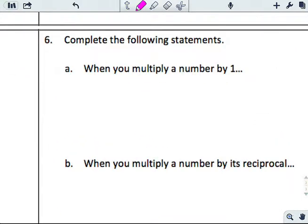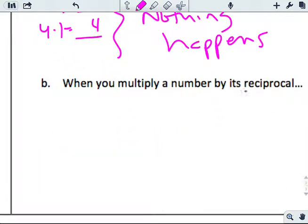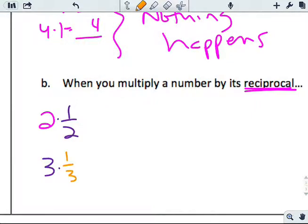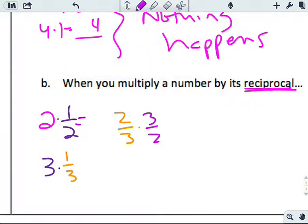Let's complete the following statements. When you multiply a number by 1, what happens when I take 3 times 1? I get 3. If I take 4 times 1, I get 4. So my claim is nothing happens. When we multiply a number by its reciprocal - reciprocal means if I take 2, its reciprocal is 1 half. If I take 3, its reciprocal is 1 third. If I take 2 thirds, its reciprocal is 3 halves. I take 2 times 1 half, I get 1. 3 times 1 third, I get 1. 2 thirds times 3 halves, I get 1. So multiply by reciprocal, you get 1.